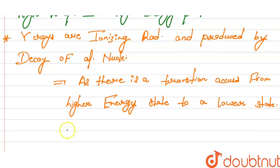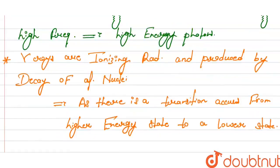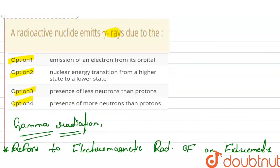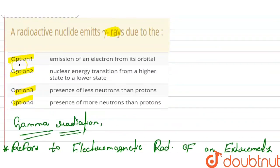This process is known as gamma decay. So from the options, option number two, nuclear energy transition from higher state to a lower state, is our correct answer. Thank you.